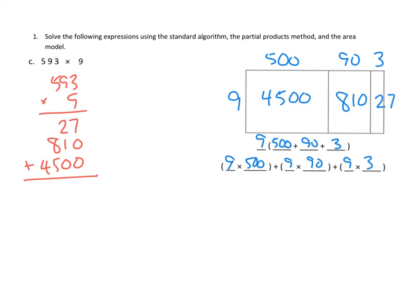We would add our partial products together. 7 plus 0 plus 0 is 7. 2 plus 1 is 3. 8 plus 5 is 13. 3, with 1 in the thousands. And then 1 plus 4 in the thousands is 5,337.